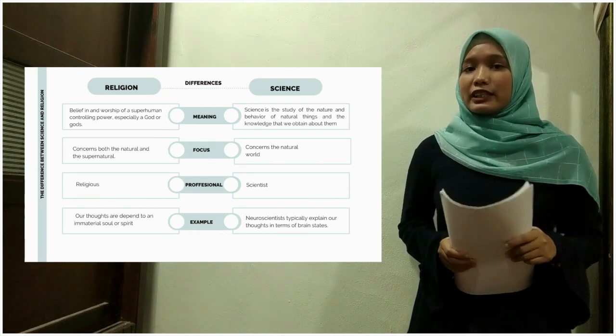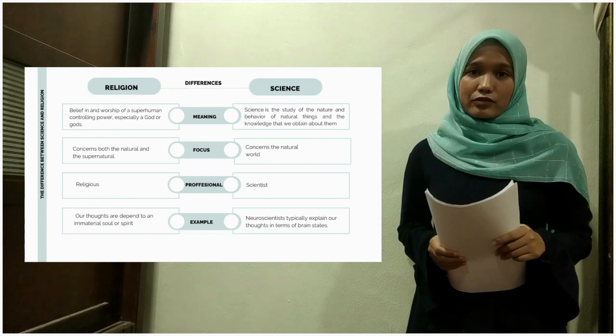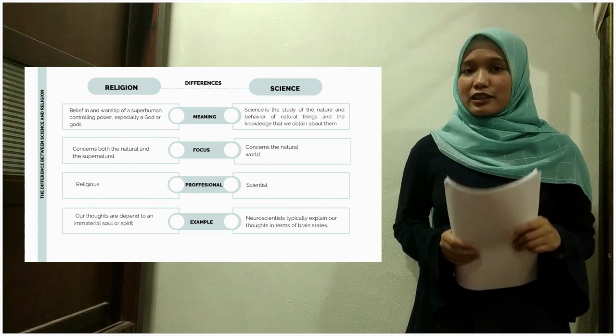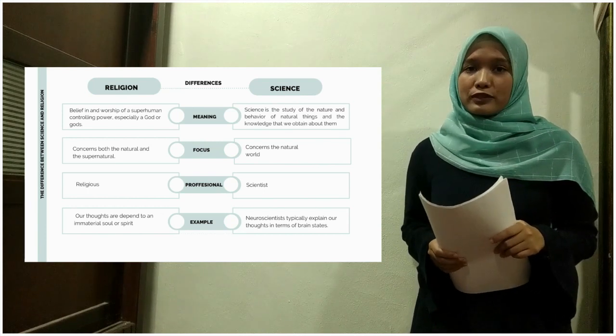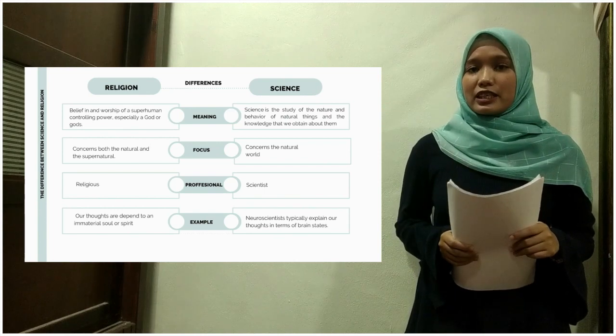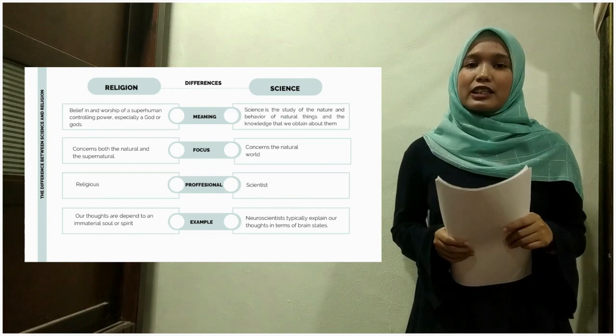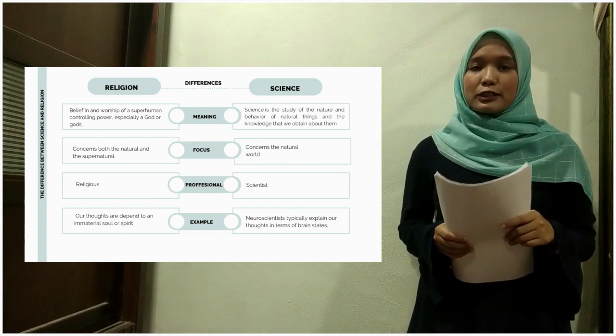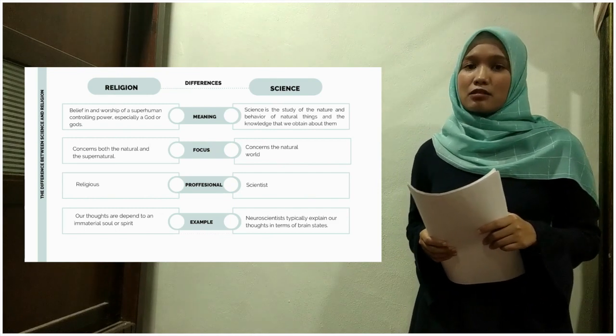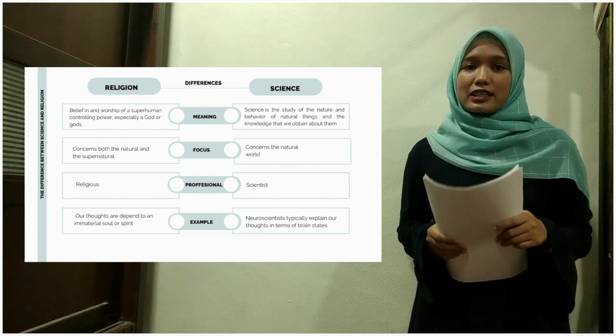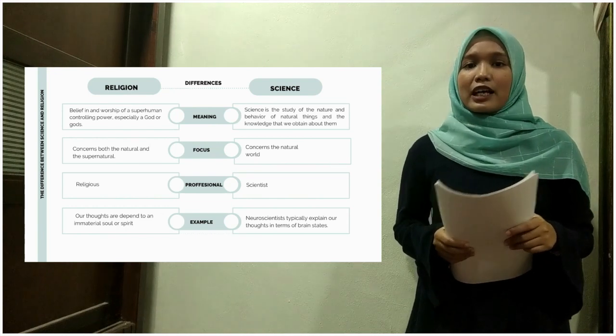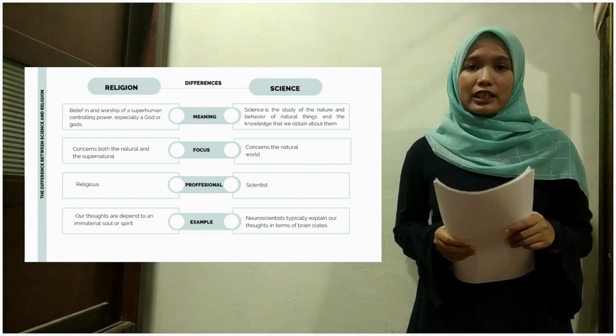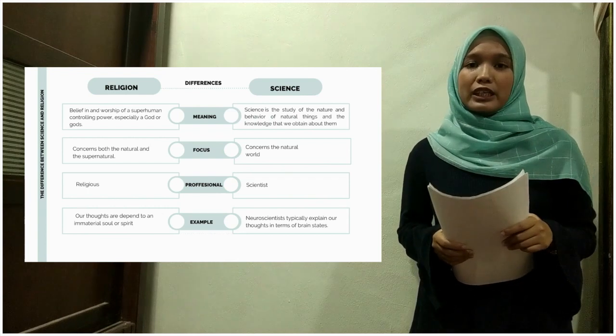I think everyone already understands about science and religion. So now, let's see the difference between both of them. The first difference is the meaning itself where religion is belief in the worship of a superhuman controlling power, especially a god.